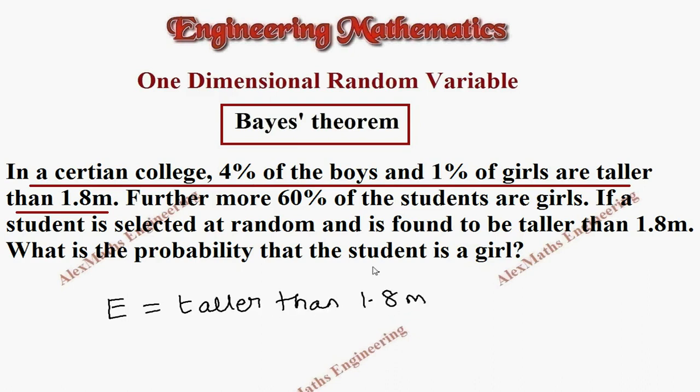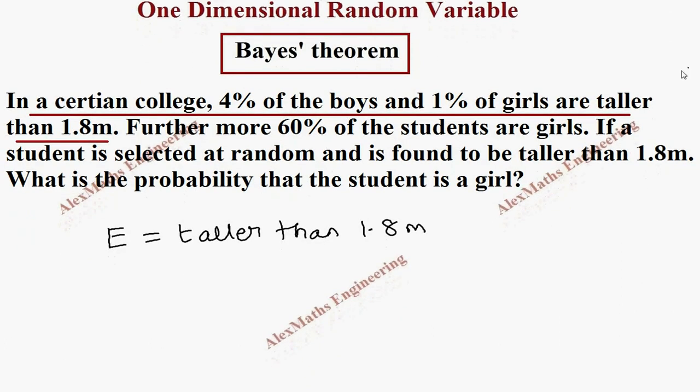Now, we have to represent this 4% of the boys and 1% of the girls with the expression. That is P of, it is a boy, and they are taller than 1.8 meter. So it is P of E by B.